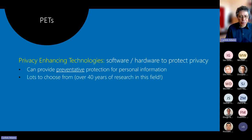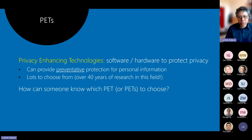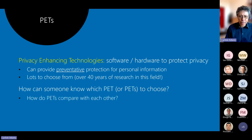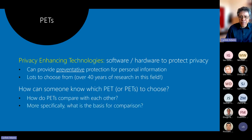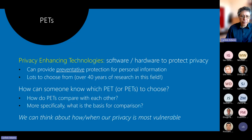There are lots of PETs to choose from. This field has been around for over 40 years, with many proposals in academic literature, business, and freeware software. On the flip side, that can be a little bit challenging — how do you know which one to choose? If you want to protect your privacy, how do you know which PET or collection of PETs to pick? That begs the question: how do they compare with each other? How can you look at two different PETs and say which one is better for your particular situation or privacy goal? We can think about when our privacy is most vulnerable to see if that helps us.